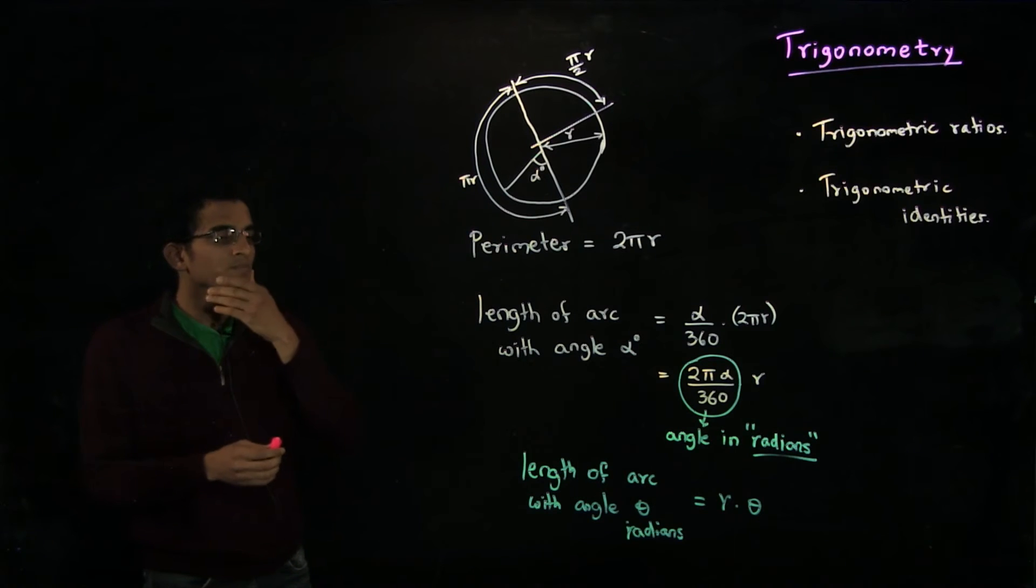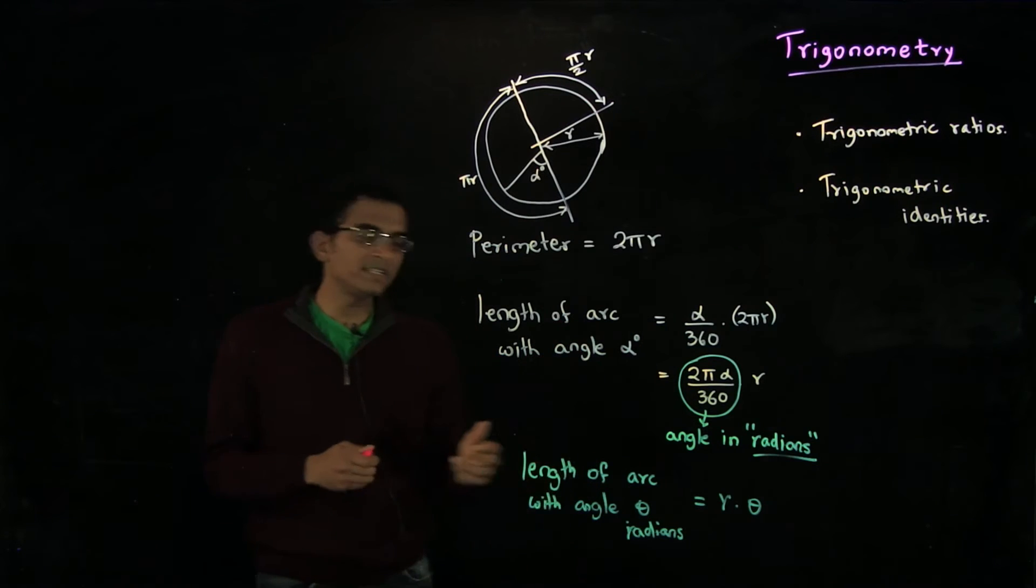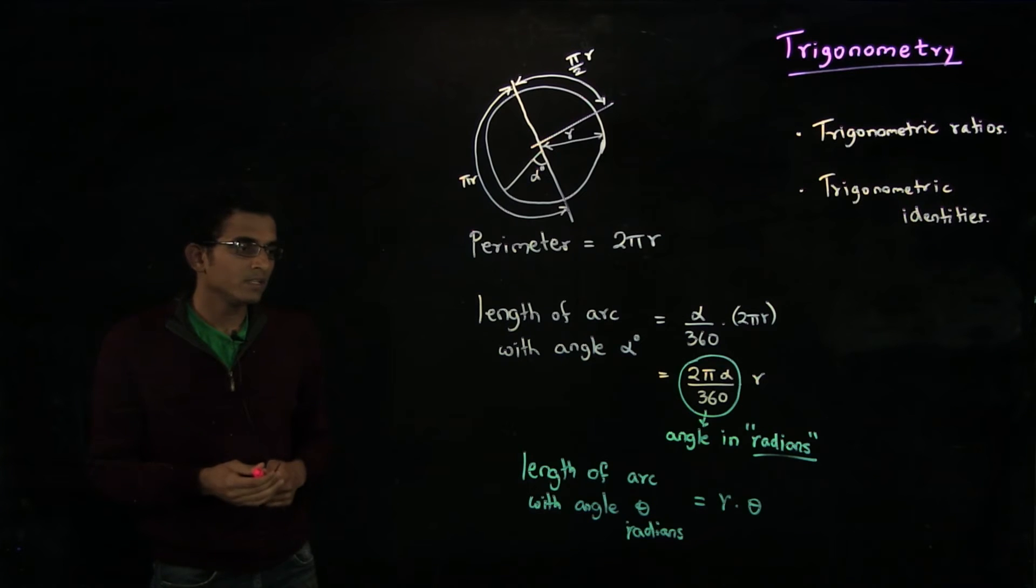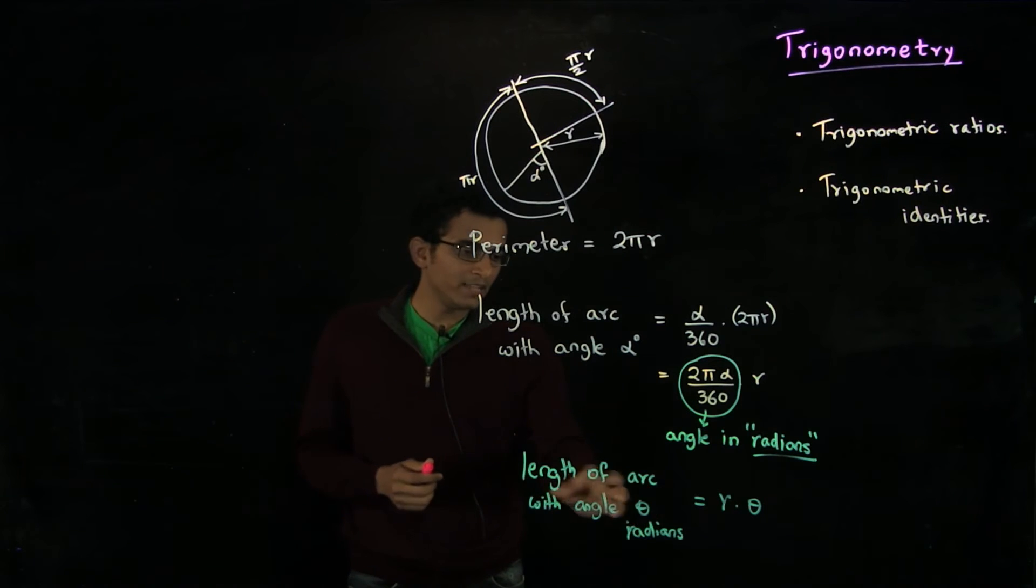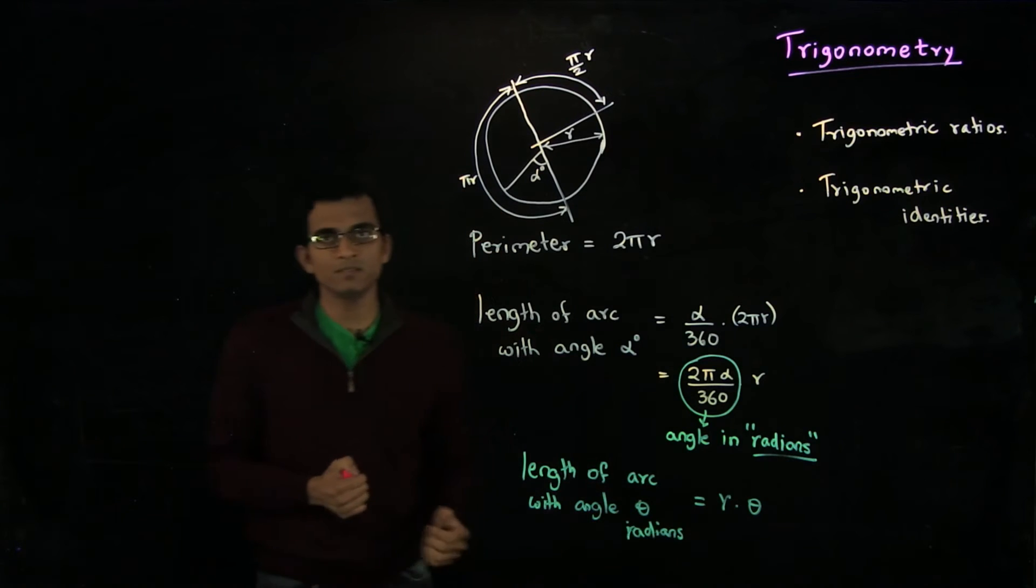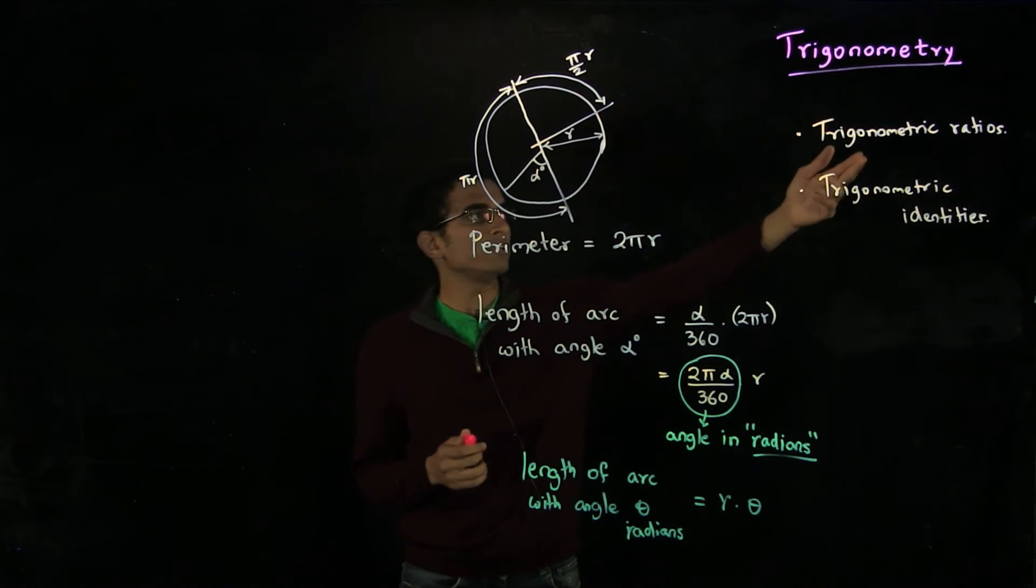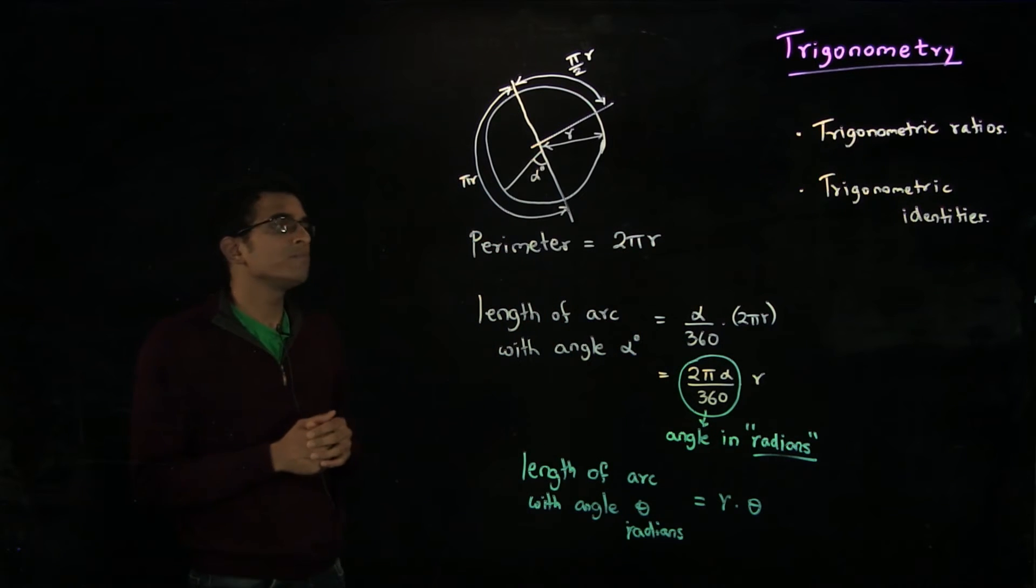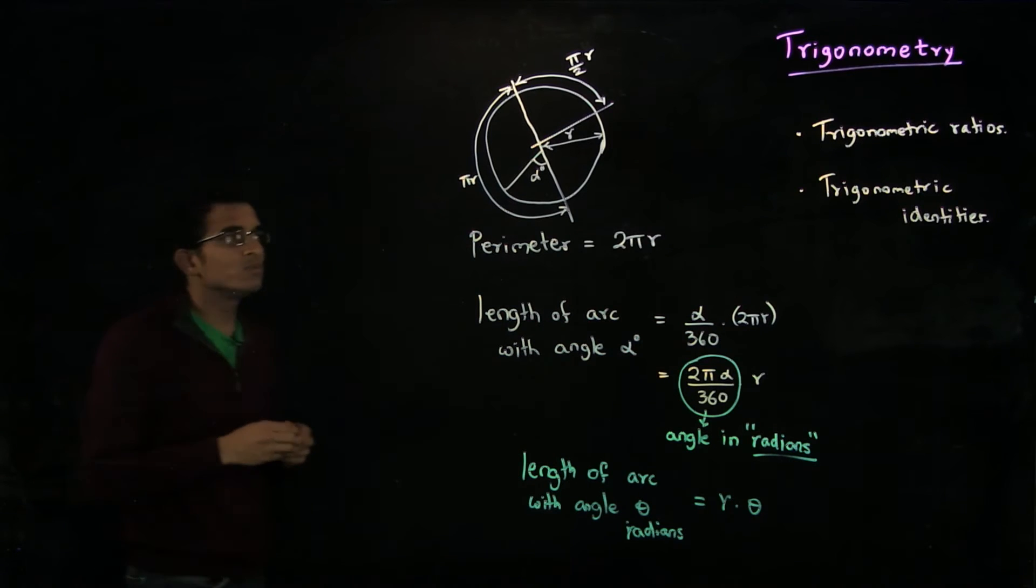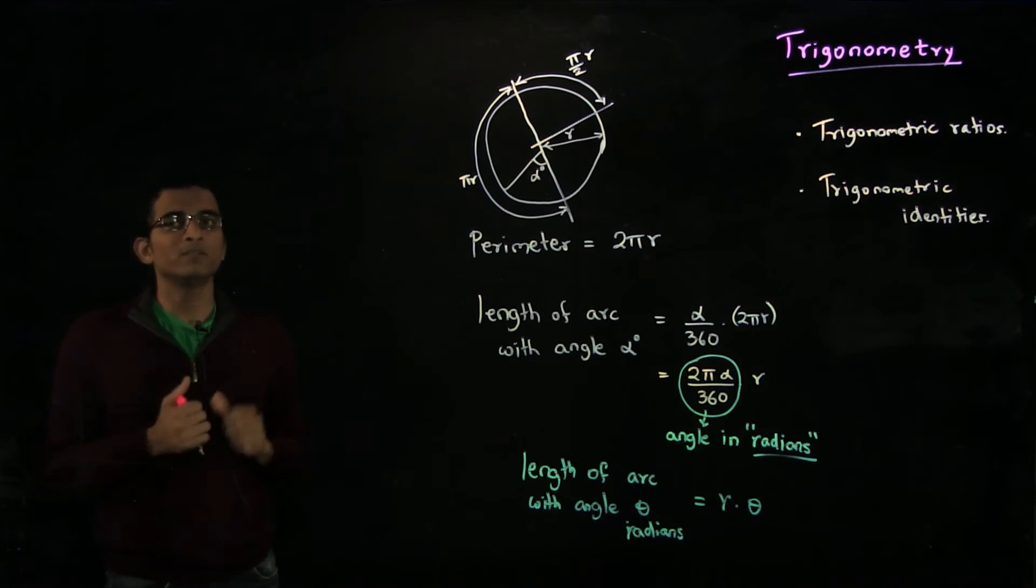We just saw how to measure angles in degrees and radians, and we said that radians is the more natural unit to think about angles. Now the length of the arc with angle theta radians is just r times theta. In the rest of the video, we will talk about trigonometric ratios, we will define what they are, and we will talk about some trigonometric identities. These are the algebraic tools which will help us reason about angles in a more algebraic way.